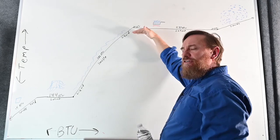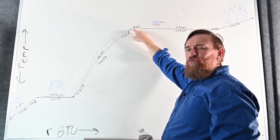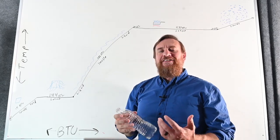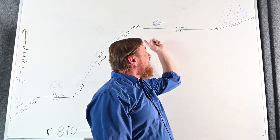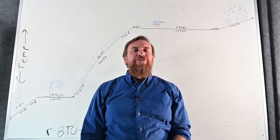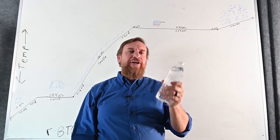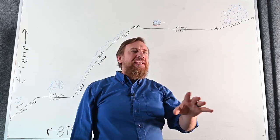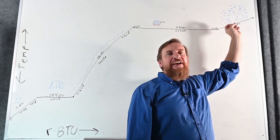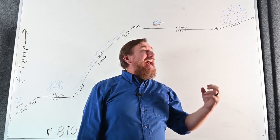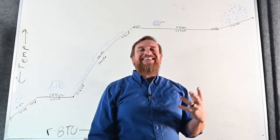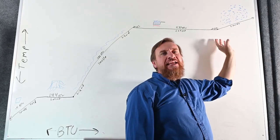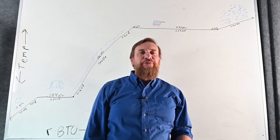After we get up to 212°F, we're back to latent heat again. Notice the flat line — the temperature is not changing from 212°F liquid all the way to 212°F vapor. That is latent heat. Then after we get to vapor, we're going to have sensible heat again. After we change it to vapor at 212°F, we can still add heat to it, and that's where we start to superheat — adding heat above that saturation point.